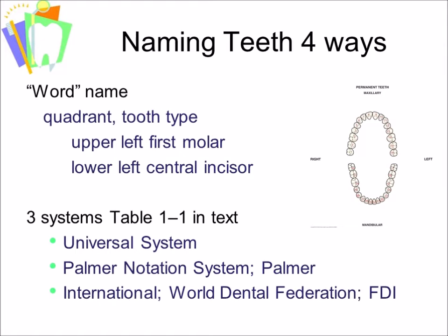The other three ways to name teeth are systems: the Universal System, the Palmer Notation System — sometimes just referred to as Palmer — and the International System, also known as the World Dental Federation or FDI.